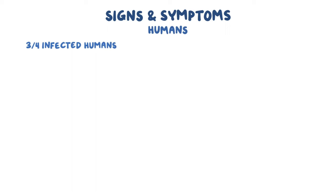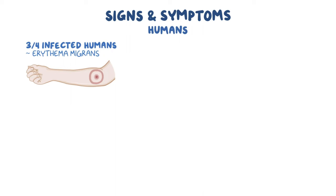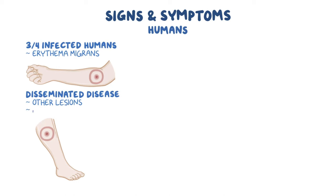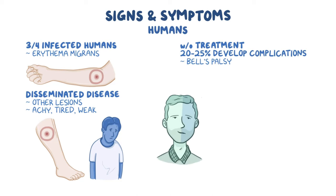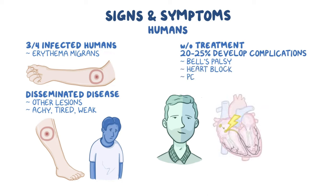About three out of four infected humans develop a classic rash called erythema migrans. It usually occurs as a red bump at the site of the bite that expands, often with clearing between the center and periphery resembling a bullseye. If disseminated disease develops, other erythema migrans lesions may appear and people feel achy, tired, and weak. Without treatment, about 20-25% develop neurologic complications like Bell's palsy, where there's weakness on one side of the face, or cardiac manifestations like heart block or pericarditis.